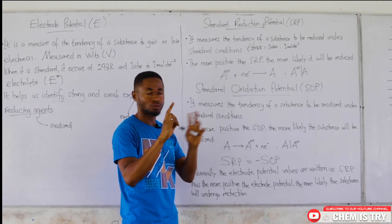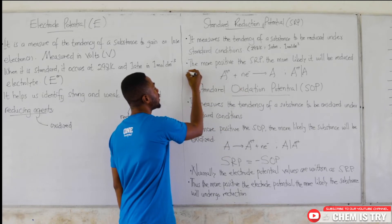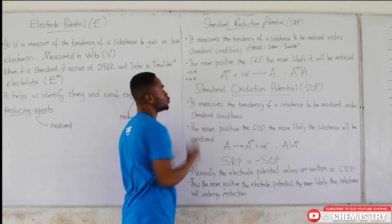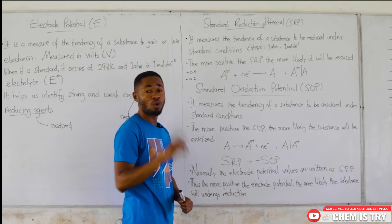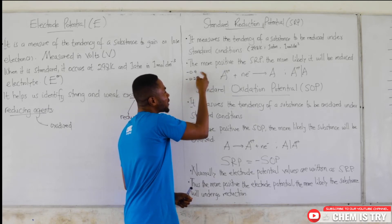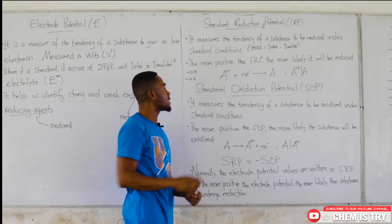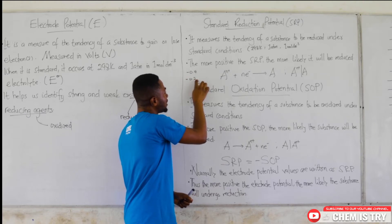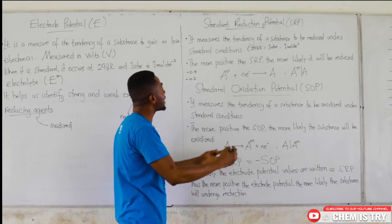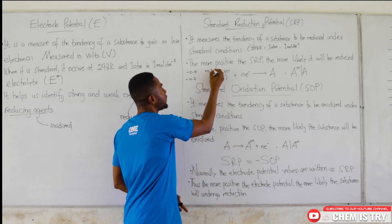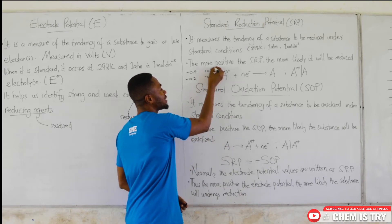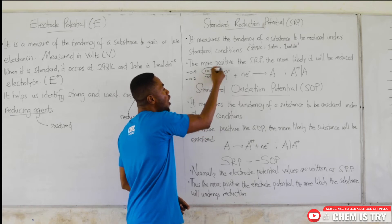So if we have two substances, one with a standard reduction potential value of negative 0.4 and the other with a standard reduction potential of negative 0.2, the one with a standard reduction potential of negative 0.2 has a value more positive than negative 0.4. That means this one will more easily undergo reduction, while the other will feel reluctant in undergoing reduction. Similarly, if we have a standard reduction potential value of positive 0.3 volts and another substance with negative 0.1 volts, this one is more positive, so it is more likely to be reduced.